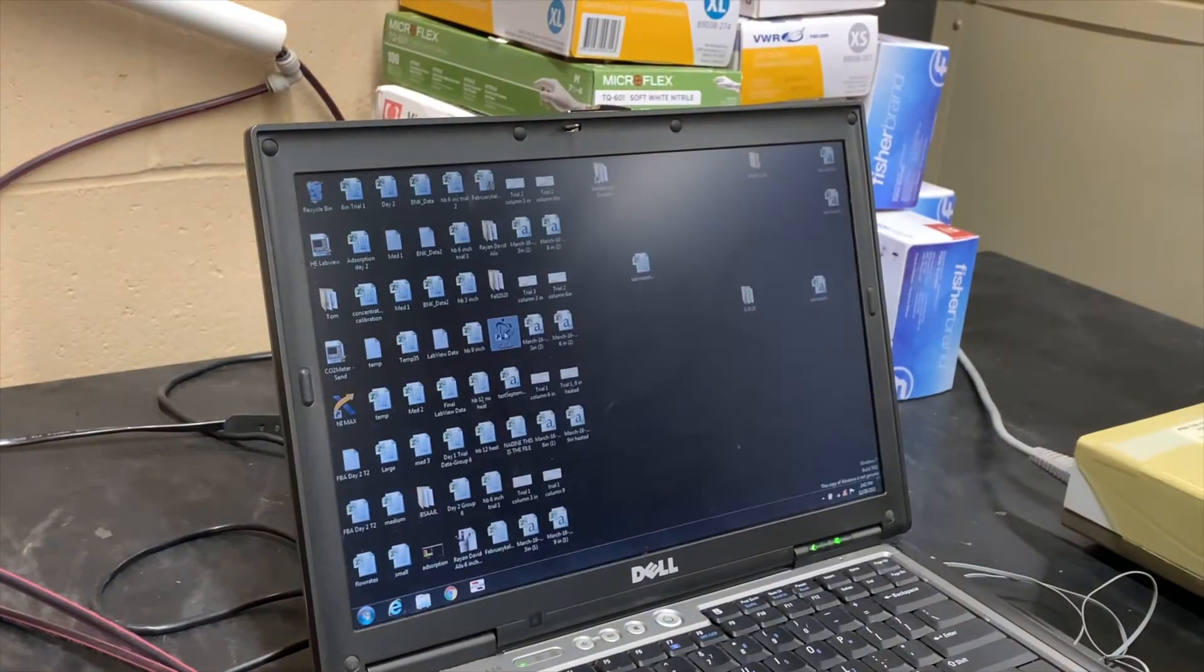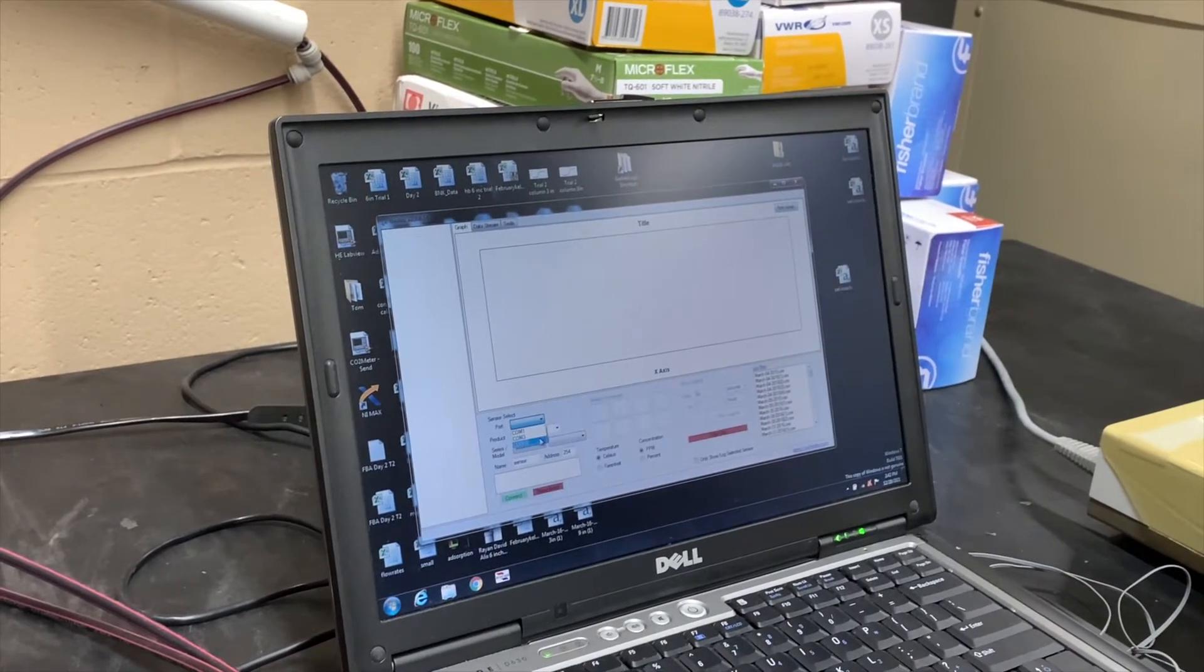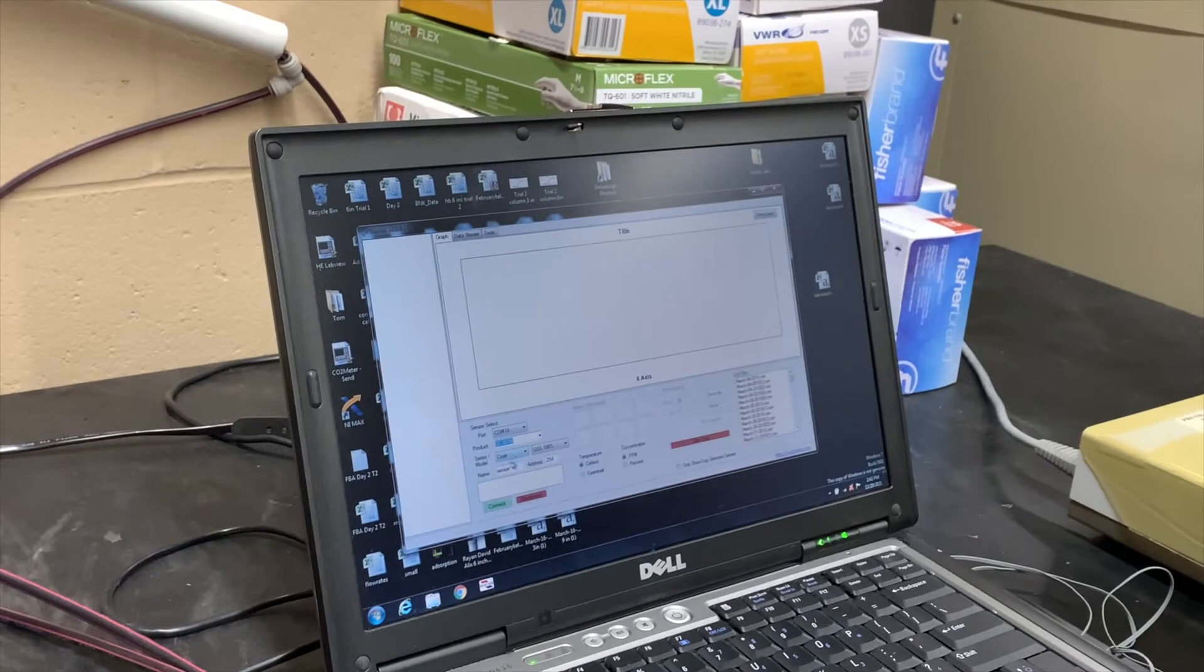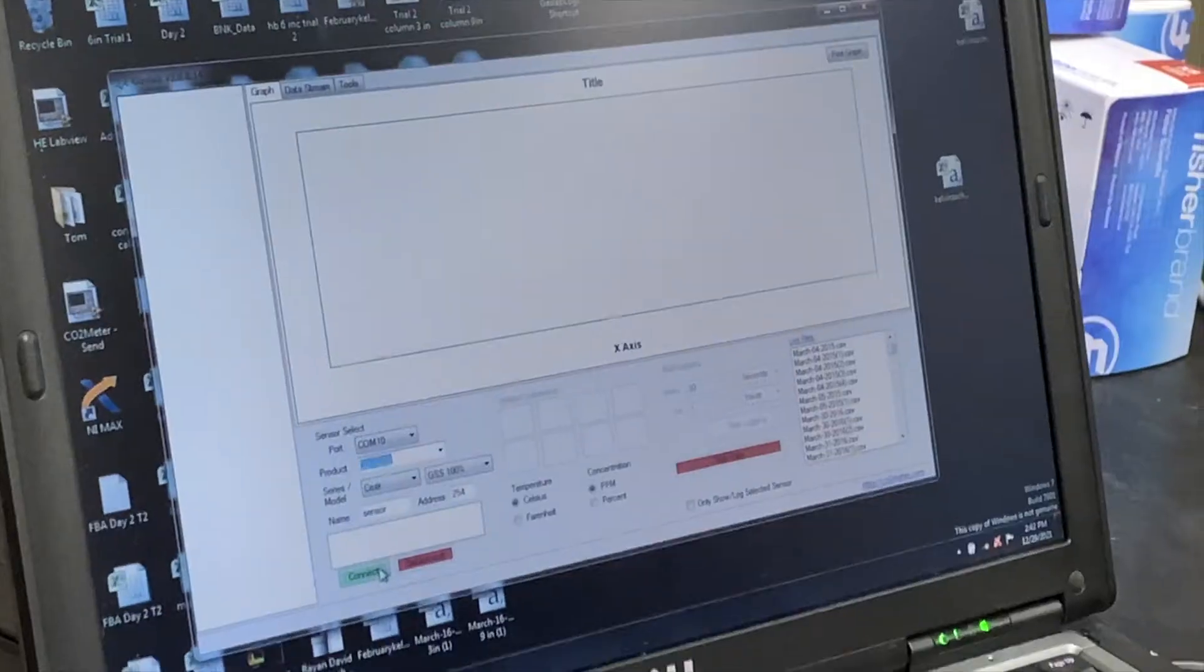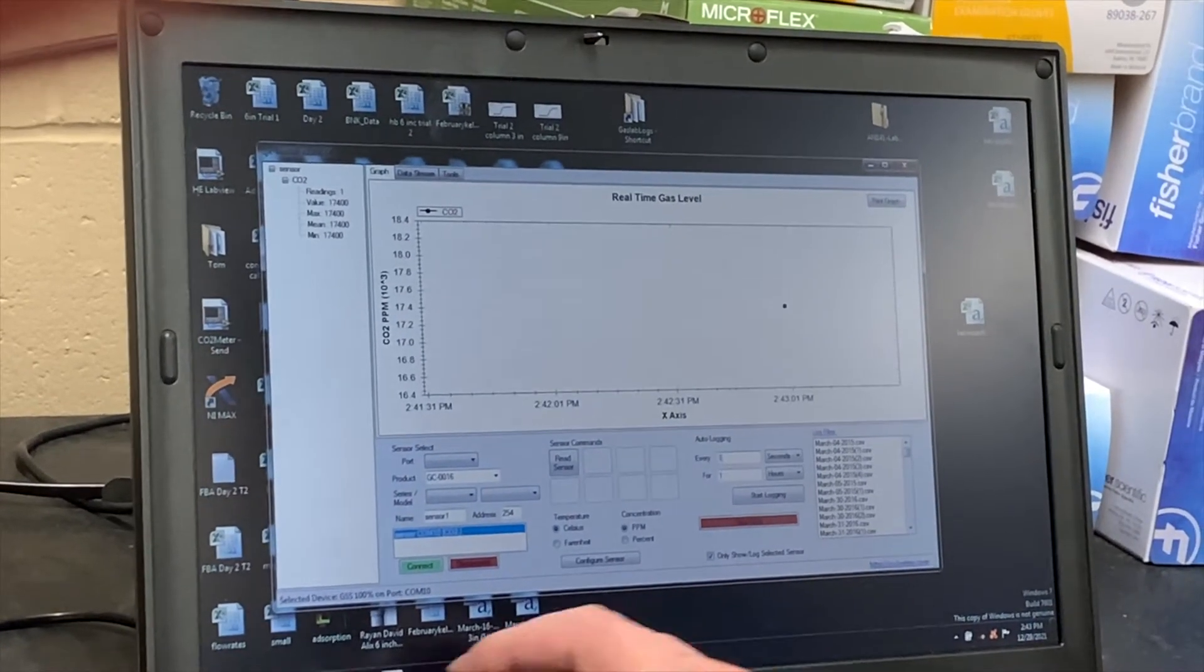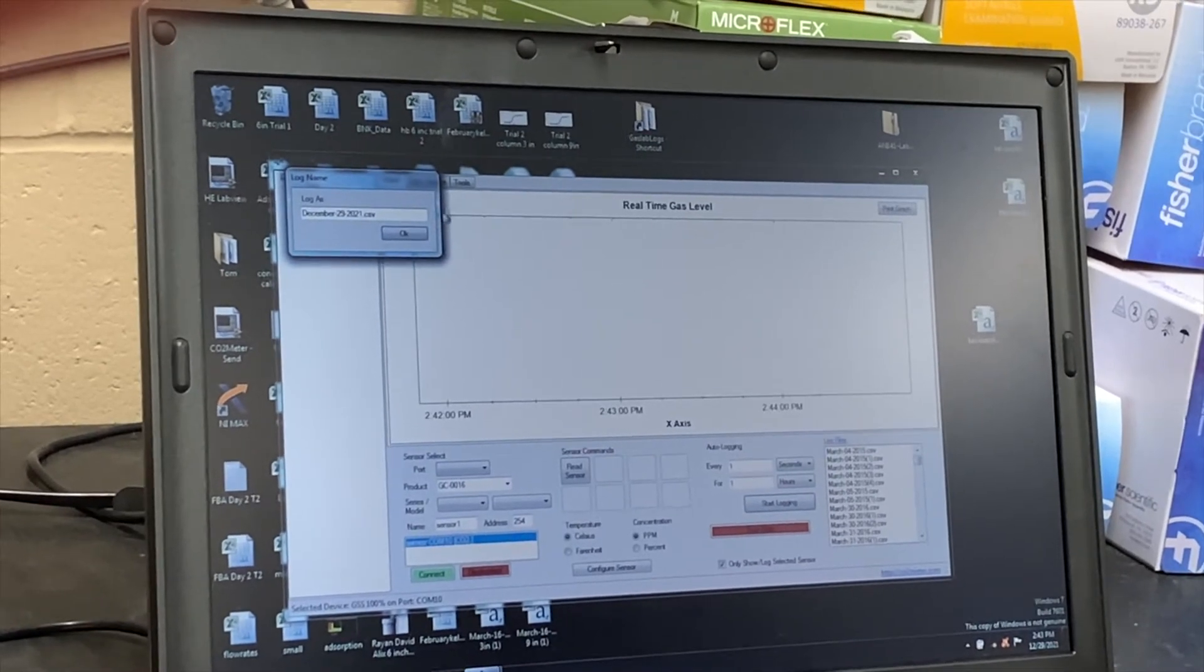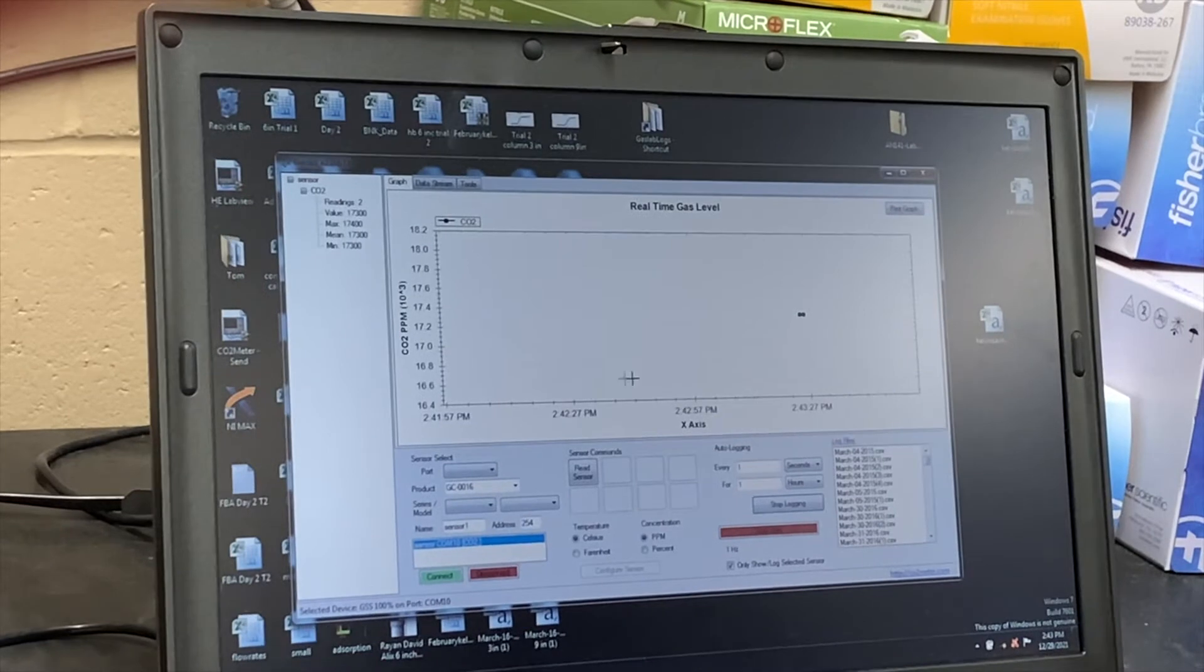For data acquisition, open the GasLab software. Set COM10 as the port, GC16 as the product, the series model to COSR, and GSS 100%. Click connect. Change the auto logging from every 30 seconds to every second. Click start logging and then OK so that the system may begin logging the CO2 readings every second.